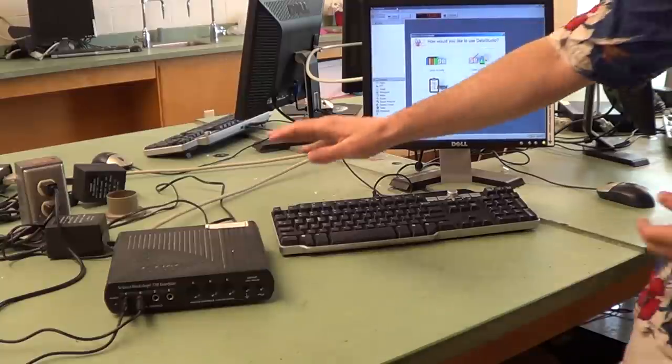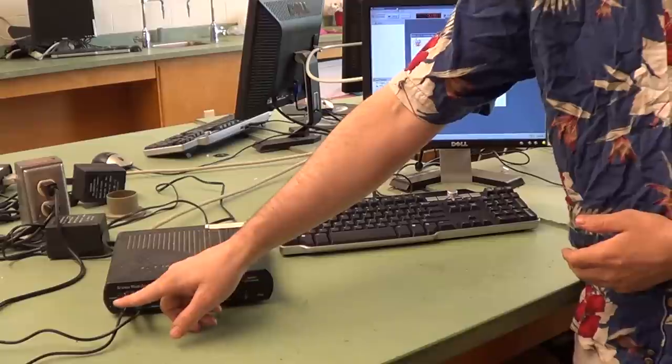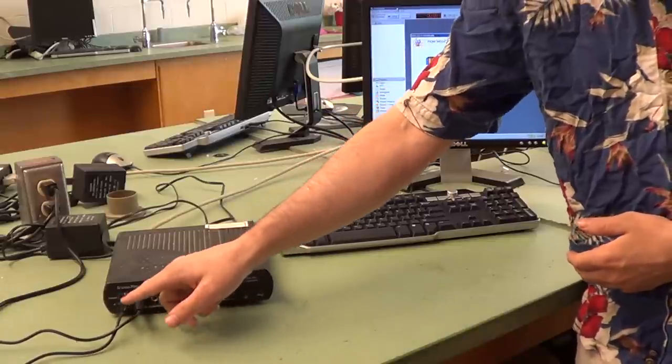Data studio interfaces with the science workstation down here. As you can see, the photo gates are actually connected to channels one and two in this case.